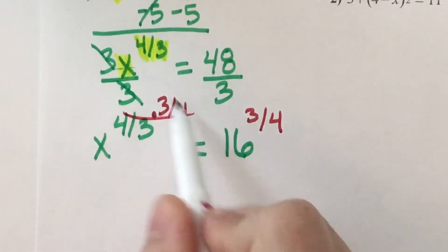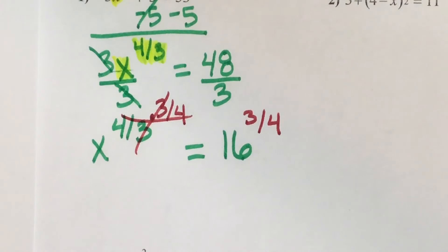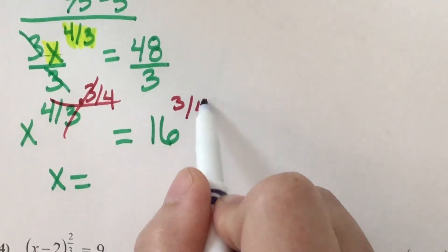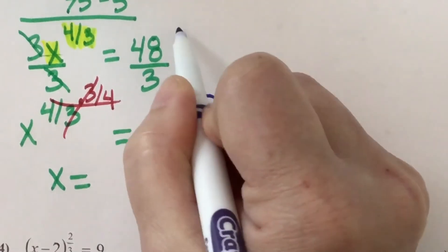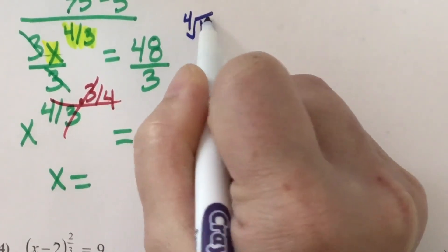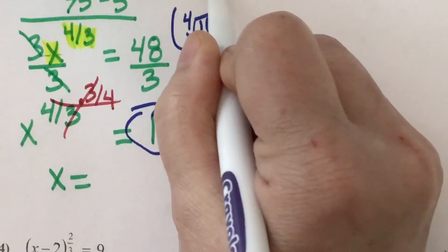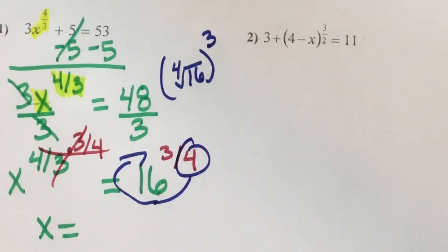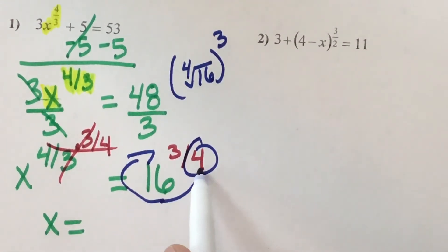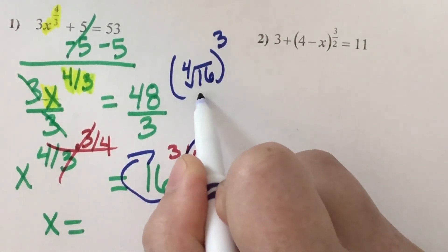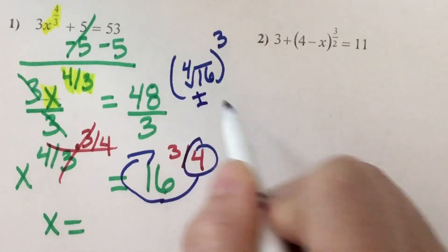The 4's and 3's cancel — all I'm left with is x. The right-hand side, I need to go around the world. This is telling me to take the 4th root of 16 and raise it to the 3rd power. Am I taking an even root? Yes — 4 is an even number, this is an even root. And when you take an even root, there's a plus or minus.